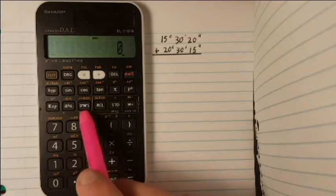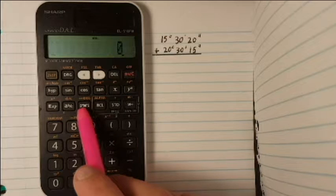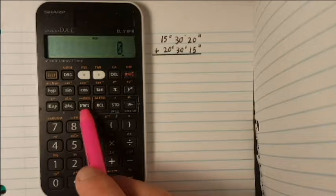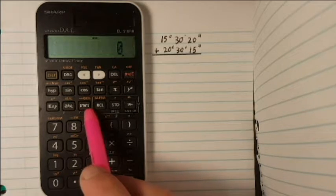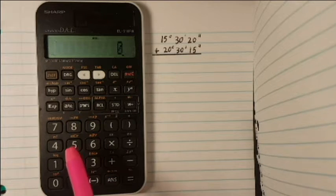The key to it is this DMS button right here which we press to add a degree, minute, or second sign after a number. We would use it like this.